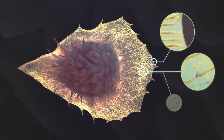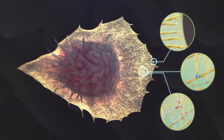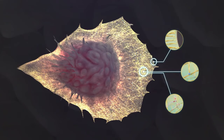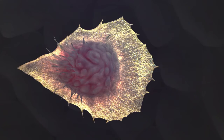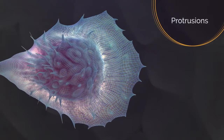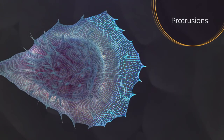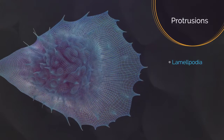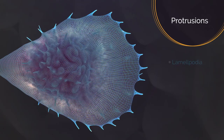Branching off and cross-linking, these activities push the plasma membrane, forming cell protrusions such as wide, blunt projections called lamellipodia and narrow, pointed projections called filopodia.